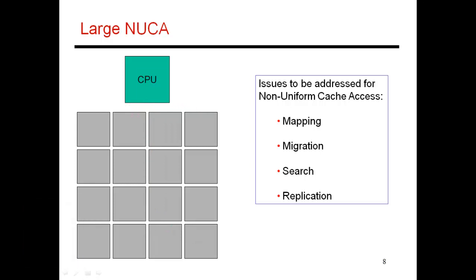The most important issues to consider are how you map data. If data is placed more often in banks close to the CPU, you'll have low latency access. As far as possible, you want to migrate your most frequently accessed blocks into those banks closer to the CPU. If a block can be placed anywhere in cache, that also requires a search mechanism, because you have no idea where the data is going to be placed. I'm going to focus more on the mapping portion for now.